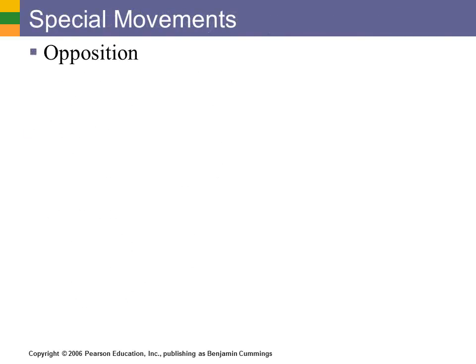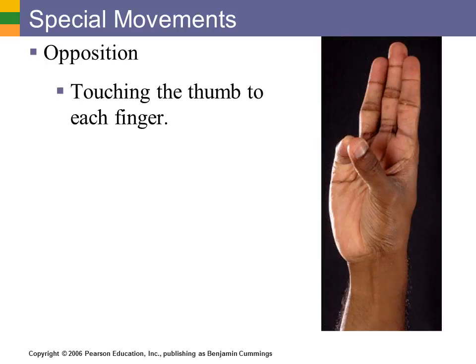The next couple of slides deal with some special movements that don't fit in the other categories. The first one is opposition, which involves taking your thumb and pressing against all four of your other fingers. This is allowed because of the special saddle joints of the thumb, which allow you to do this.